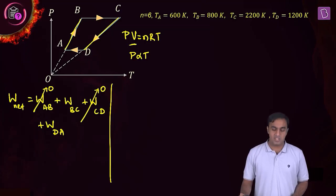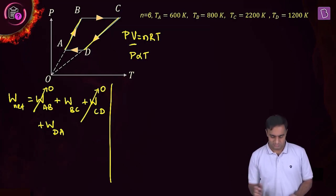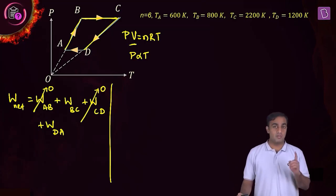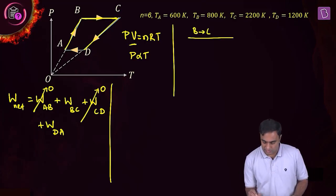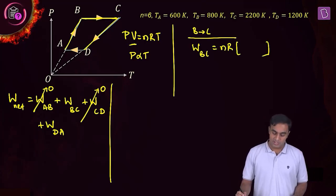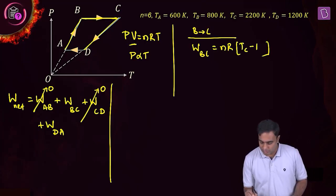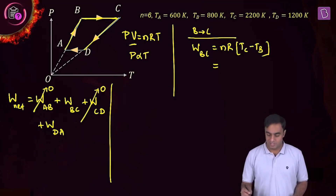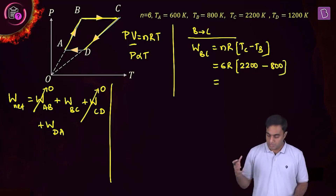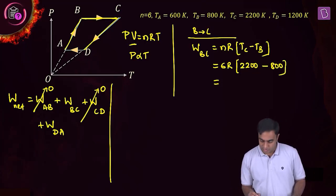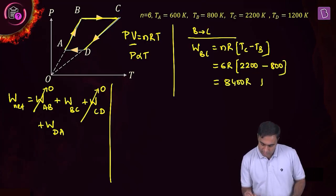For process BC, the work done will be W_BC = nR(T_C − T_B). Substituting n = 6, T_C = 2200 K, and T_B = 800 K: the difference is 1400 K, giving W_BC = 6R × 1400 = 8400R joules.